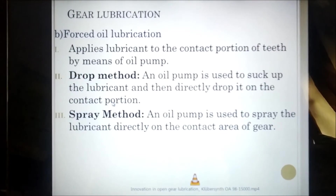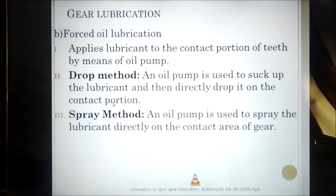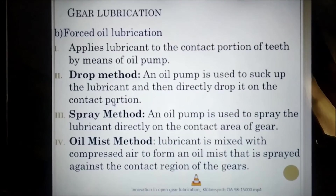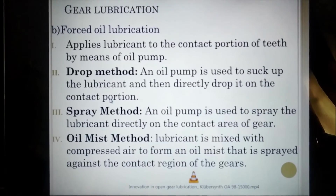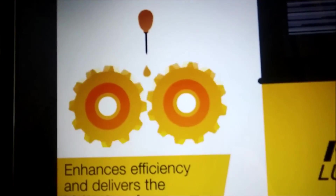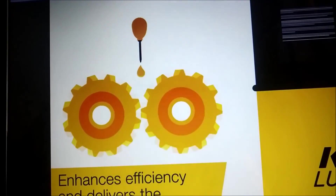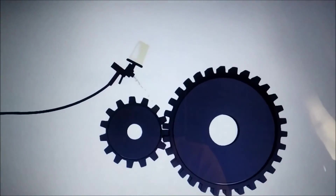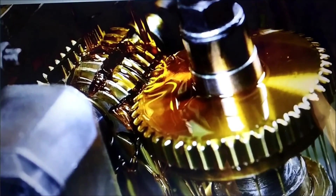Second is the spray method, and third is the oil mist method, where lubricant is mixed with compressed air to form an oil mist and that is sprayed against the contacting region. In this video, the drop oil method is shown — using a pump, oil is dropped between the contacting surface of the gears. In the spray method, lubricating oil is sprayed between the contacting surfaces. This is all about the gear lubrication system.